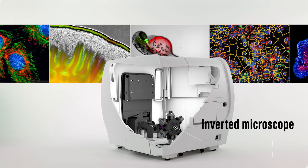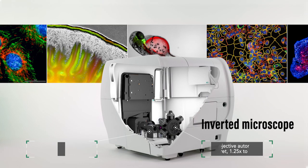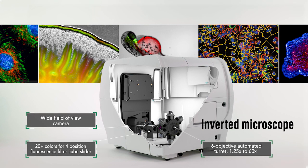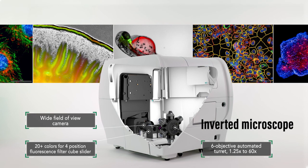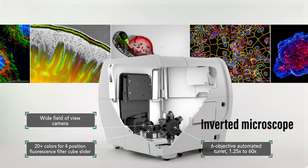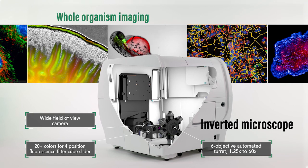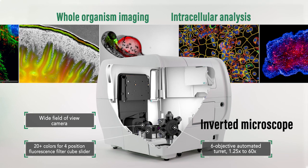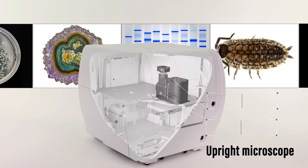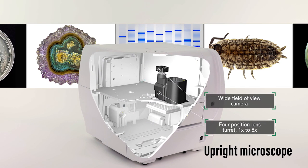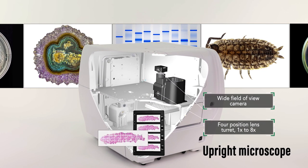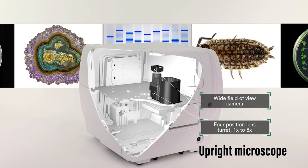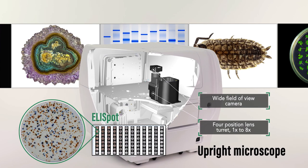Citation's inverted microscope has a 1.25x to 60x objective range, enabling image capture for a wide variety of applications, from whole organism imaging to intracellular analysis. The upright microscope expands the application range to region of interest, or ROI identification, and ELISPOT assays.